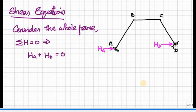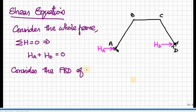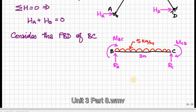Consider the whole frame. We need to consider only horizontal forces and horizontal external loads. Since no horizontal external loads are given, we have only HA and HD. Assuming both act in the right direction and applying sigma H equals 0, we get HA plus HD equals 0. This is the shear equation. The next step is to find HA and HD in terms of joint moments by considering free body diagrams of each member.